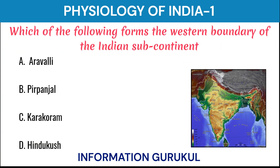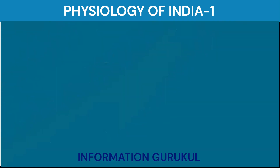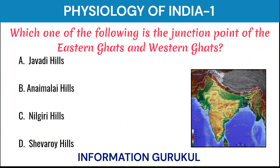Which of the following forms the western boundary of the Indian subcontinent? Hindu Kush. Which one of the following is the junction point of the Eastern Ghats and Western Ghats? Nilgiri Hills.